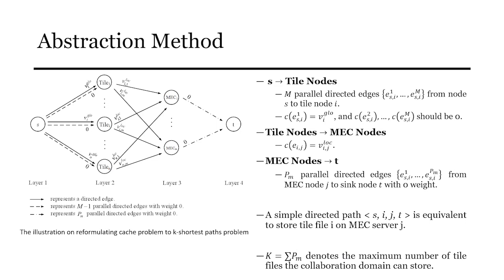Let's talk about the detail of this graph. There are M parallel directed edges from node S to node i because each tile field could store at most M replicas. Since the global profit can only be accumulated once, the first directed edge from S to I has the profit and the other edges have no profit. There is only one directed edge from any node i to node j. The edge has the profit VIG local. To accommodate limited MEC storage capacity, for any MEC node j, there are PM parallel directed edges from node j to T with zero weight.